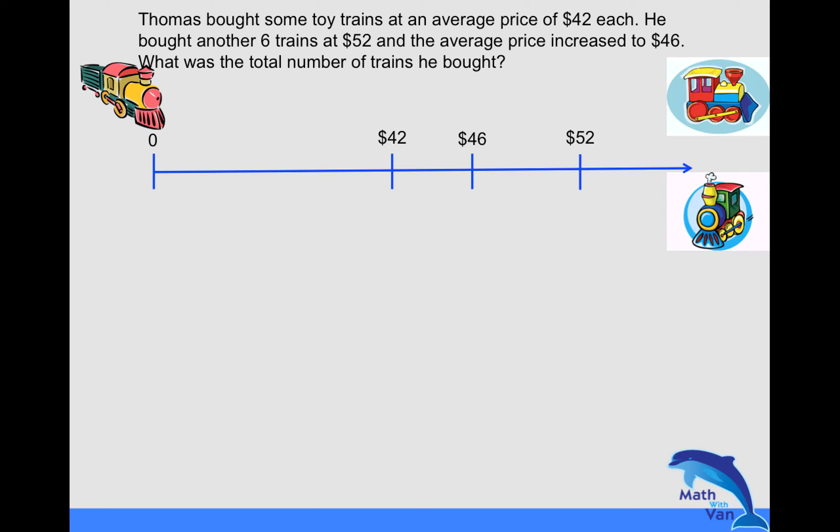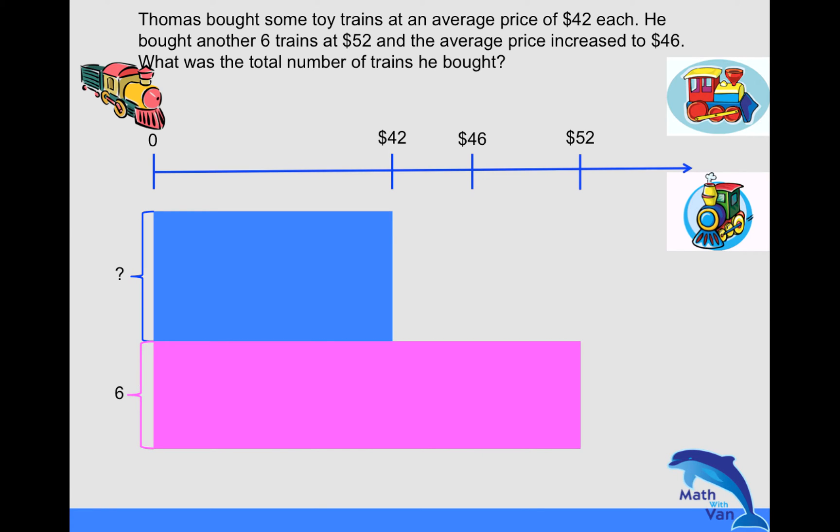And then we were told that he bought some toy trains at an average price of 42, but the fact is we don't know how many toy trains there were at first. So let's put a big block over there. And we are told that he bought another six more trains at $52, and we know that the average price increased to 46.